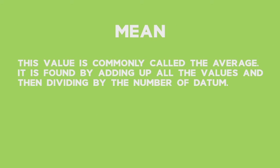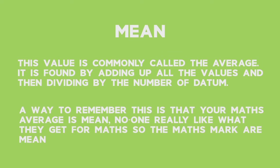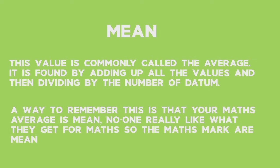Mean — this value is commonly called the average. It's found by adding up all the values and then dividing the sum by the number of datum. A way to remember this is: your math's average is mean. No one really likes what they get for maths, so maths marks are mean.